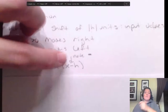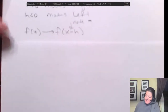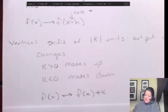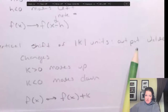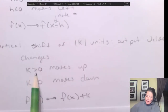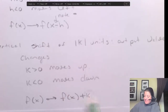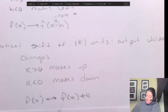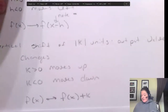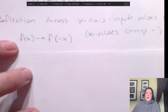For a vertical shift, it's similar but your output values change. If k is greater than zero it moves up; if it's less than zero it moves down. There's no trick with a negative — you take your whole function f(x) and add k to it. That's the difference: horizontal shifts go inside with the x, vertical shifts are added outside.